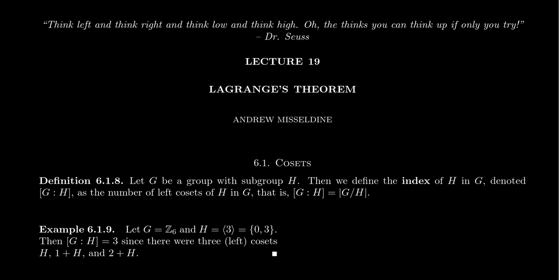So imagine that G is a group and H is some subgroup of that. We define the index of H inside of G, which will be denoted as brackets G colon H brackets. Sometimes people use parentheses in this regard, that's a common notation used here. We'll use brackets though. So bracket G colon H, that's gonna be the index and that's gonna be the number of left cosets inside of G. In other words, the index of H inside of G is equal to the number of left cosets.